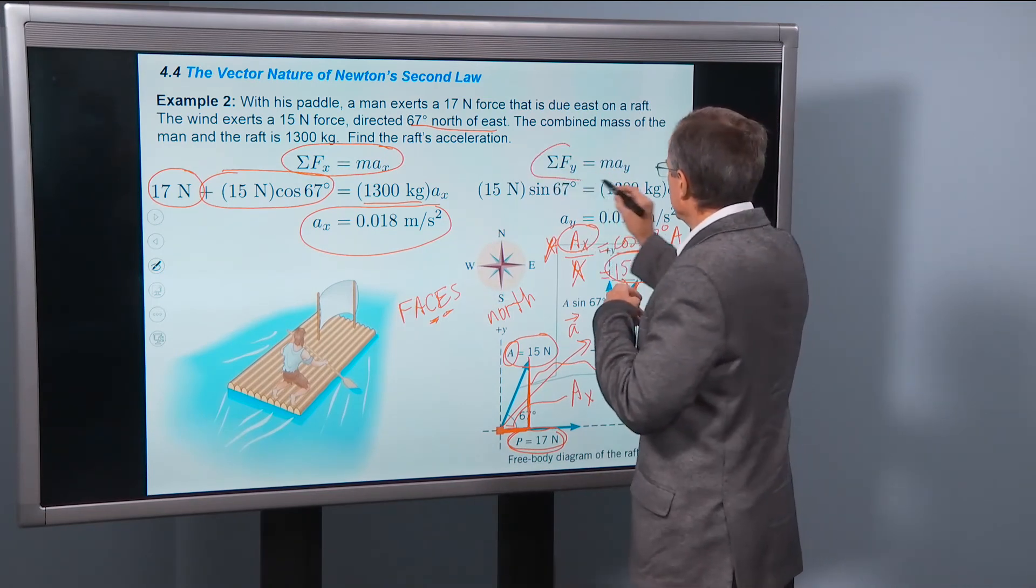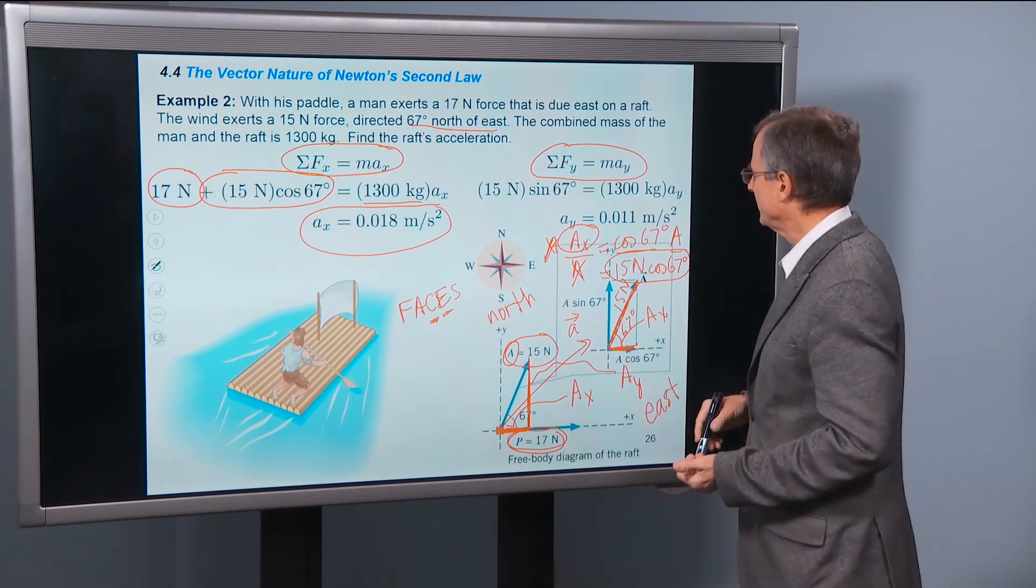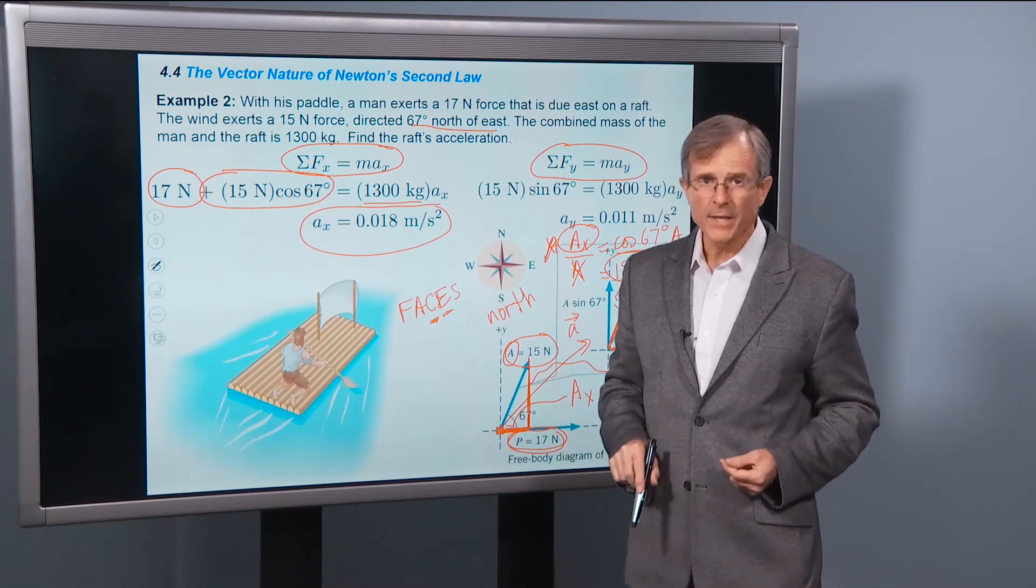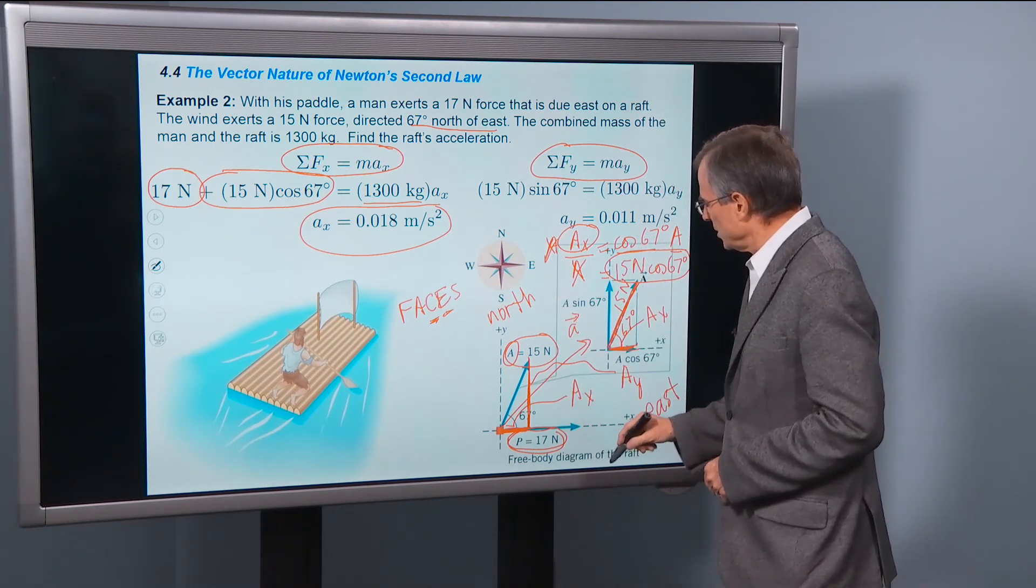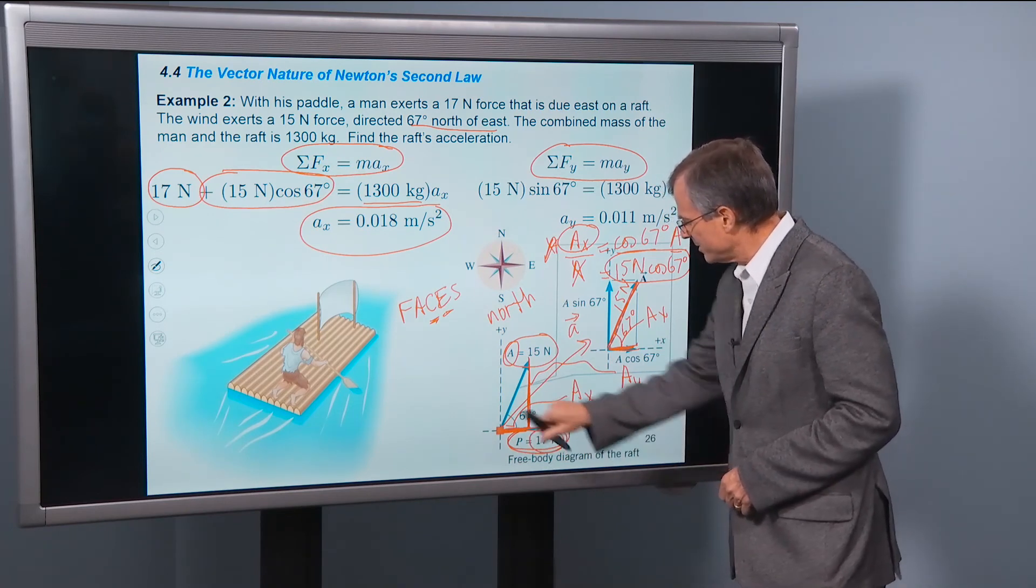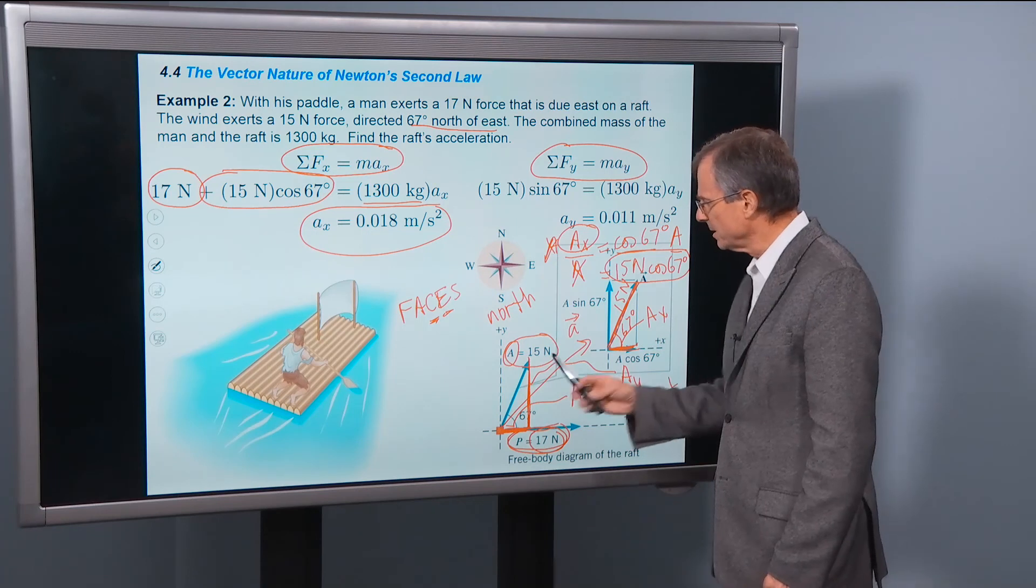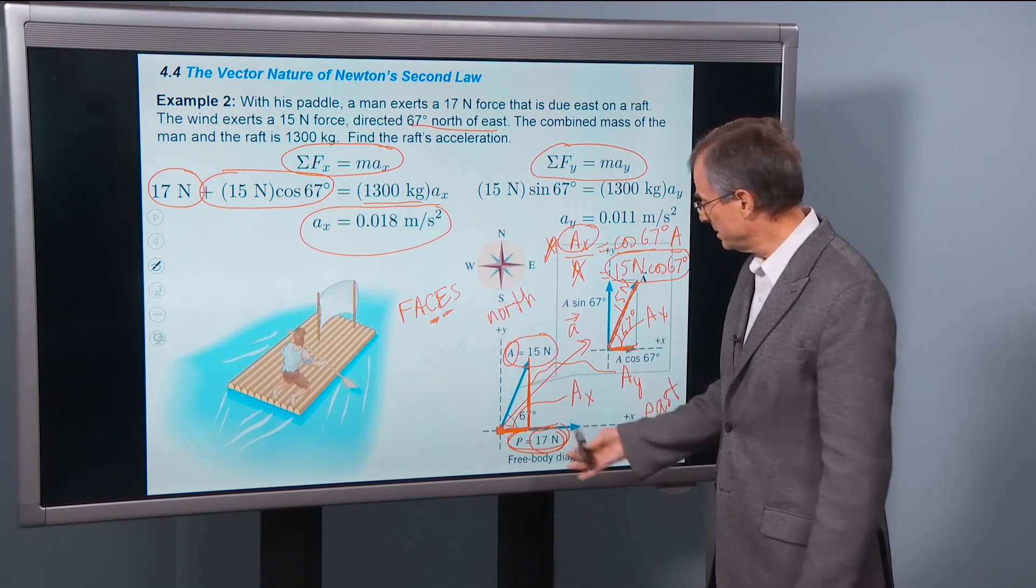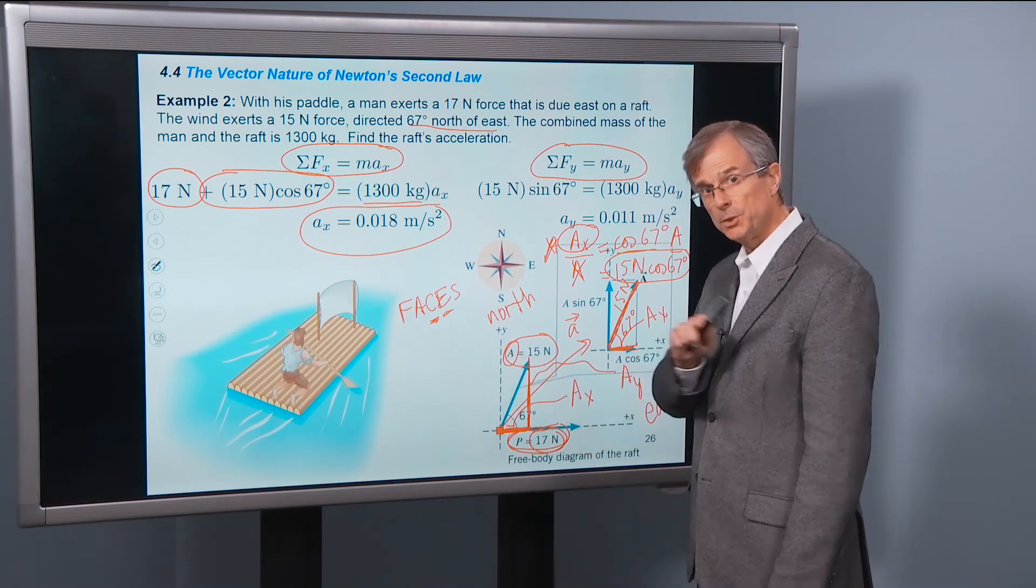We start off with Newton's second law, its component in the y direction. And we ask about the components of force in the y direction now, the vertical direction, this one here. So what's the component of this 17 newton force, which points to the right? What's its component in the vertical direction? And you would say zero, because this vector doesn't point at all in the y direction. And you'd be right.